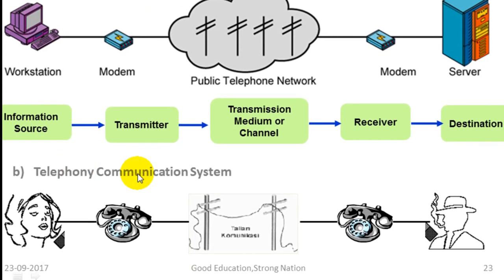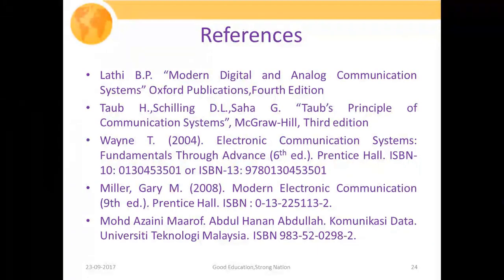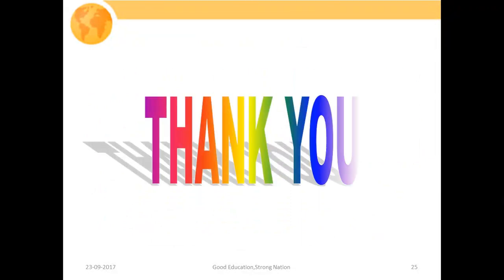In the telephony system example, one person wants to communicate with another person. The first person is the information source, who transmits information through the telephony system over the common medium, and it is received by the destination user through the receiver. These are some common examples of communication systems. Thank you very much for your patient hearing.